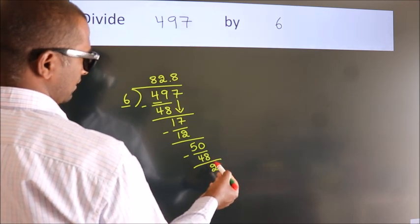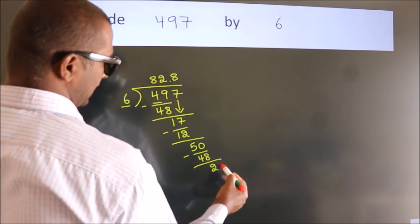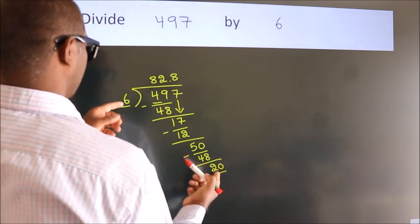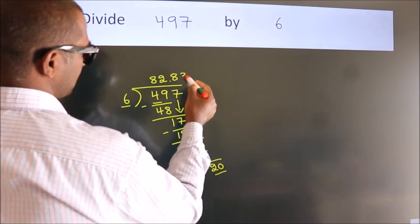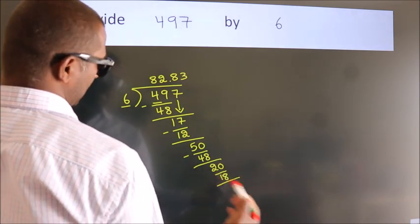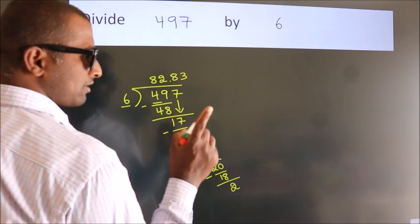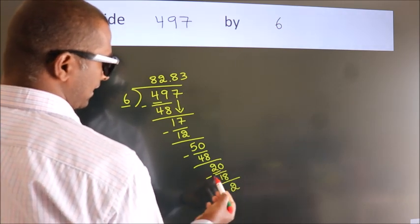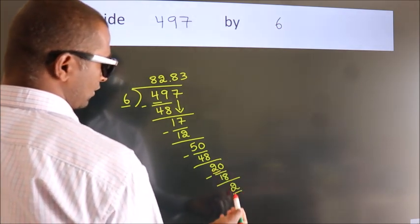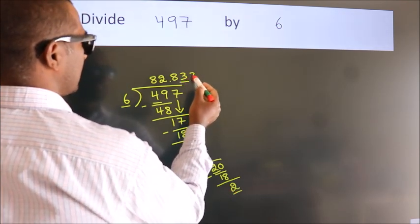After this, we already have the decimal, so directly take 0. So we get 2. Now you observe, we had 2 here and we got 2 again. That means this number keeps on repeating.